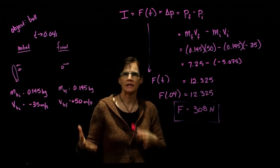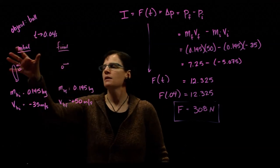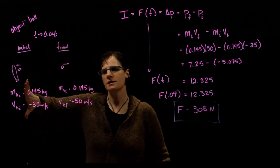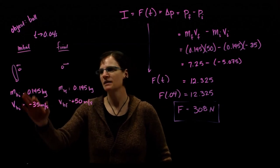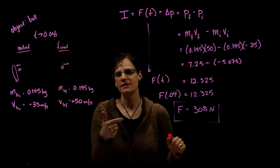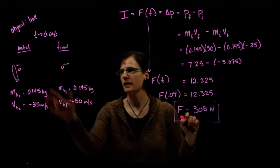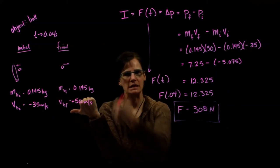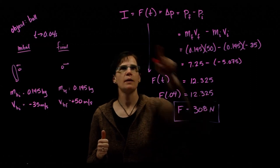All right, so looking back at what we examined, our object is the ball. The ball has an initial momentum coming into the bat based on its mass and its velocity. It has a final momentum leaving the bat based on its mass and its velocity. We are keeping in mind direction. Initially it's moving to the left, and finally it's moving to the right.